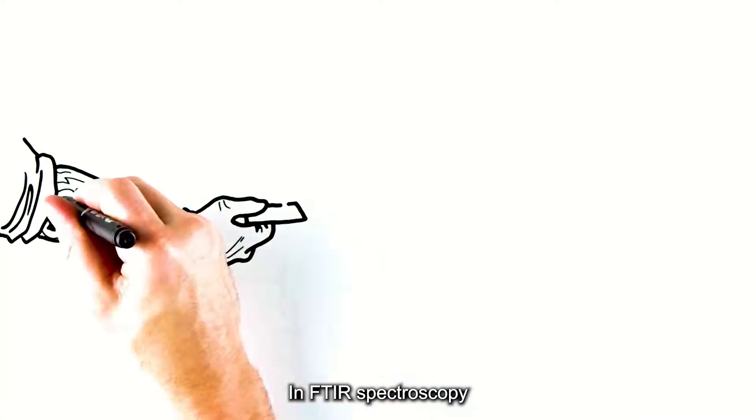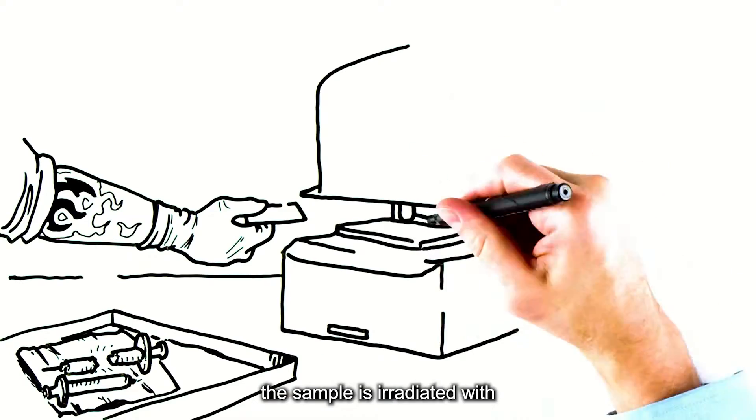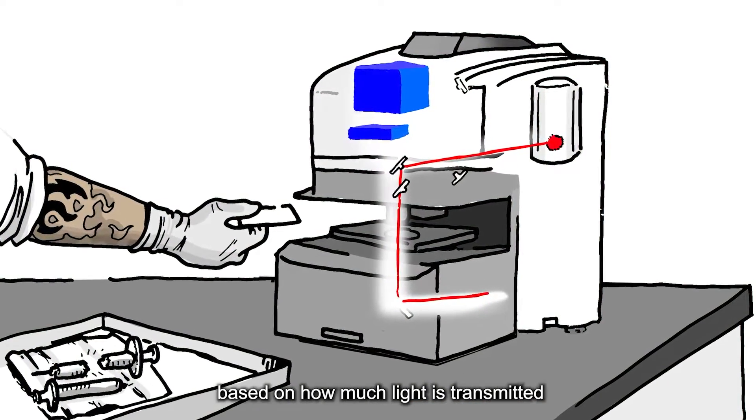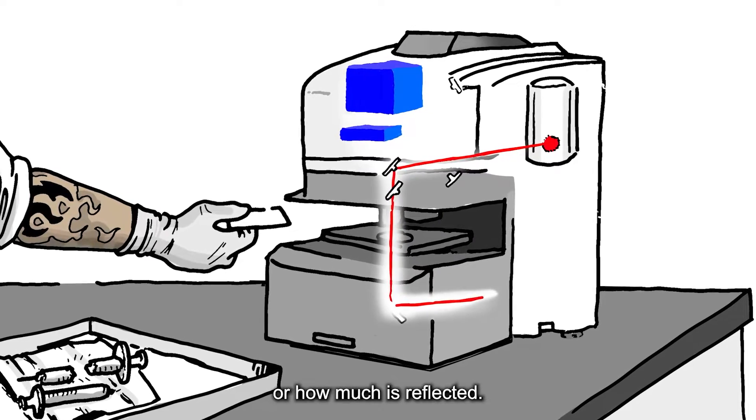In FTIR spectroscopy, the sample is irradiated with infrared light. Molecules are then identified based on how much light is transmitted through the sample or how much is reflected.